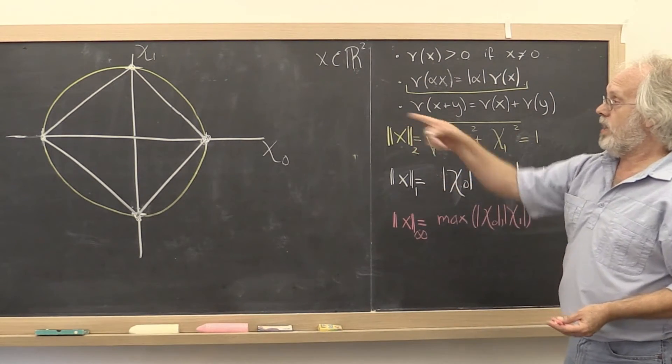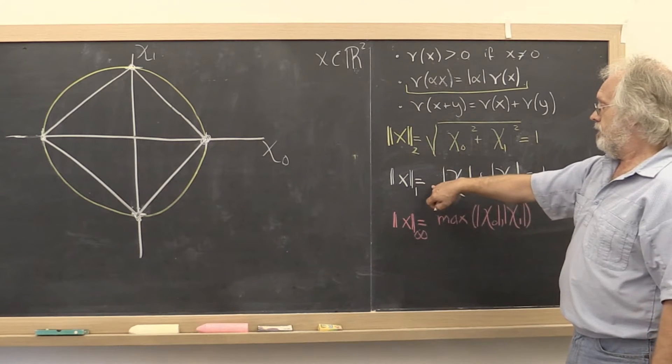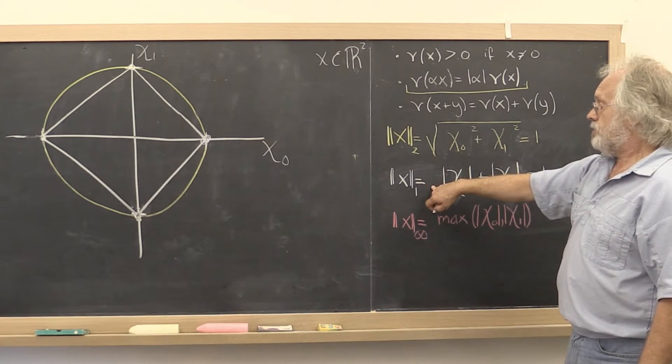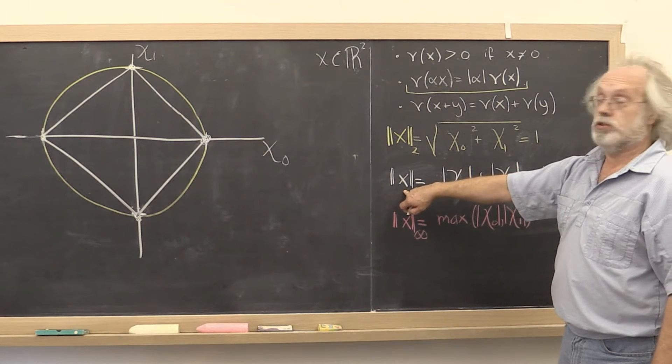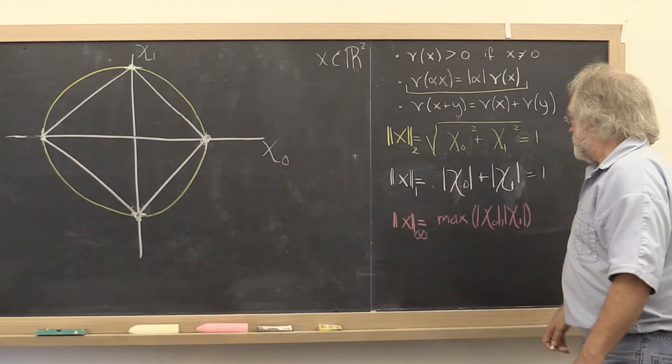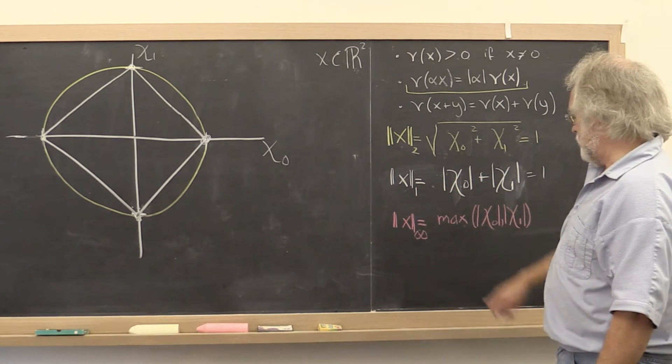So now we have a picture of all points to which vectors with one norm equal to one point. Right? All right. So let's do the last one. That one is a little bit harder.